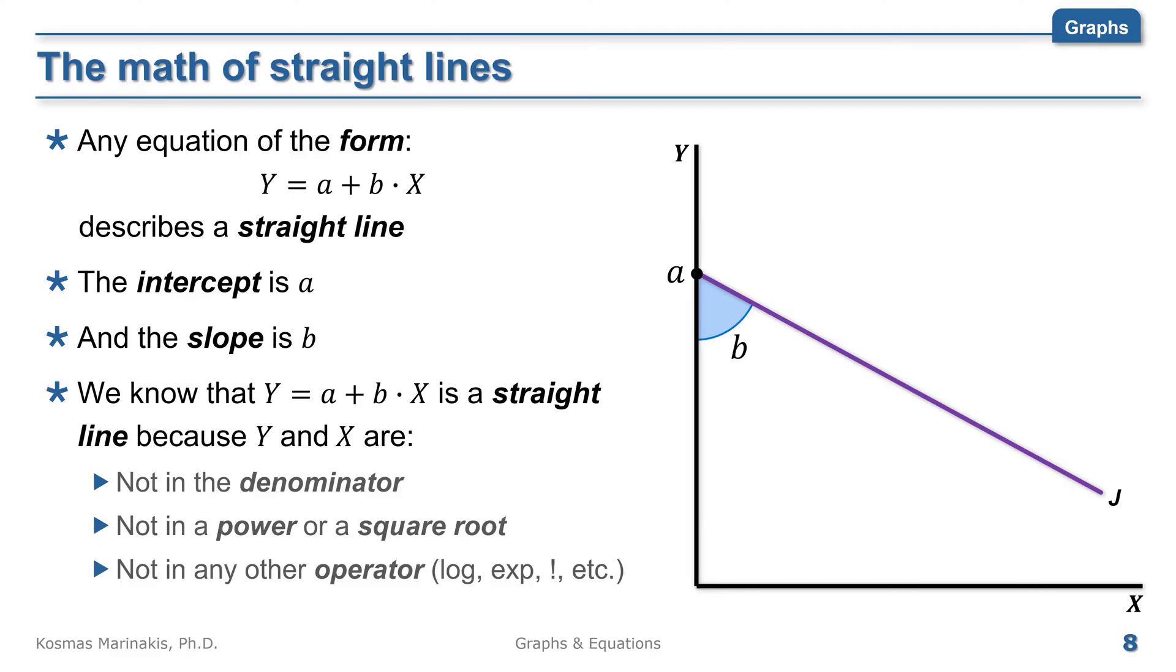Not inside any other operator such as a logarithm, an exponential, a factorial or any other fancy math terms that will not concern us in this course. Therefore, a straight line is an equation where y equals x multiplied by a positive or negative number and adding to it another positive or negative number.